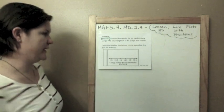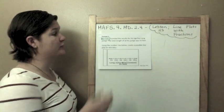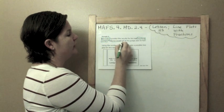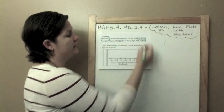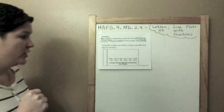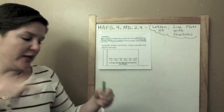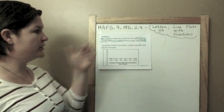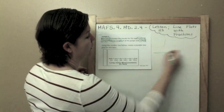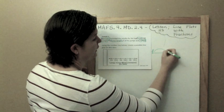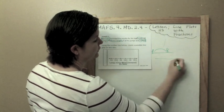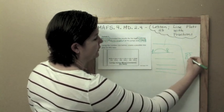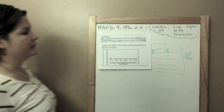Okay. Hercules recorded the results for his top four long jumps. The total length of all his jumps was 55 feet. So a long jump is when you're running, running, running, you get to the line and you jump into the sand. That's a long jump. So he does four long jumps: one, two, three, and four. All together that would be 55 feet.